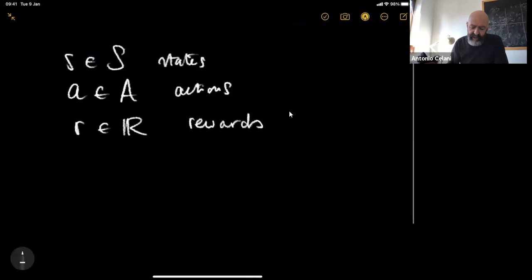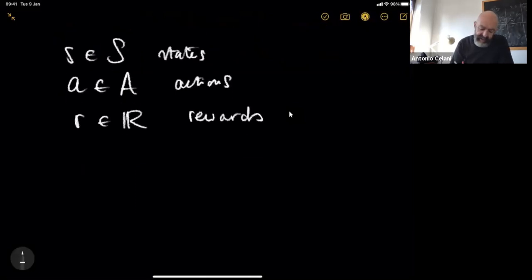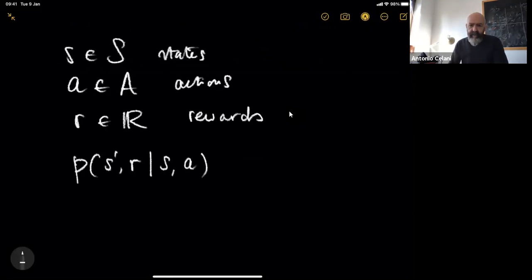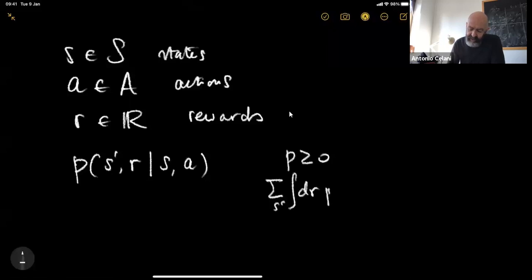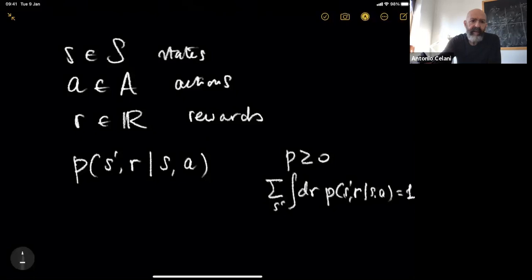The structure is inherently Markovian in the sense that there exists a probability distribution for new states and observed rewards given the previous state and the previous action. This is a transition probability. It means that all these p's are larger than zero, and if we sum over all s-prime and integrate over all dr of p(s', r | s, a), this equals one for every state-action pair. So it's always properly normalized.